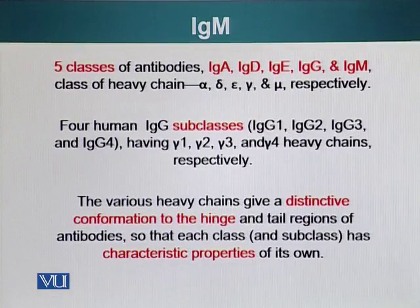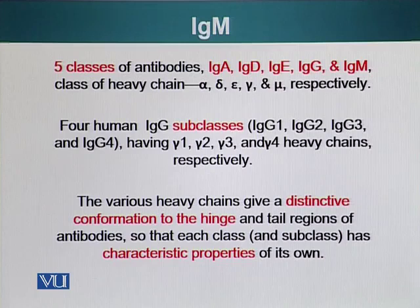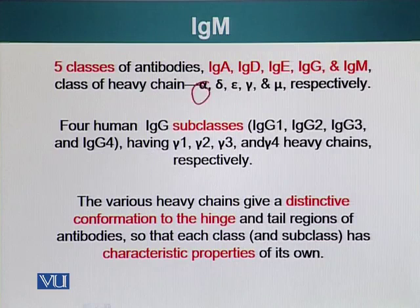The five classes of antibodies are IgA, IgD, IgE, IgG, and IgM. Their light chains are the same. The difference is in the heavy chains. IgA has the alpha chain, IgD has the delta, IgE epsilon, IgG gamma, and IgM mu.